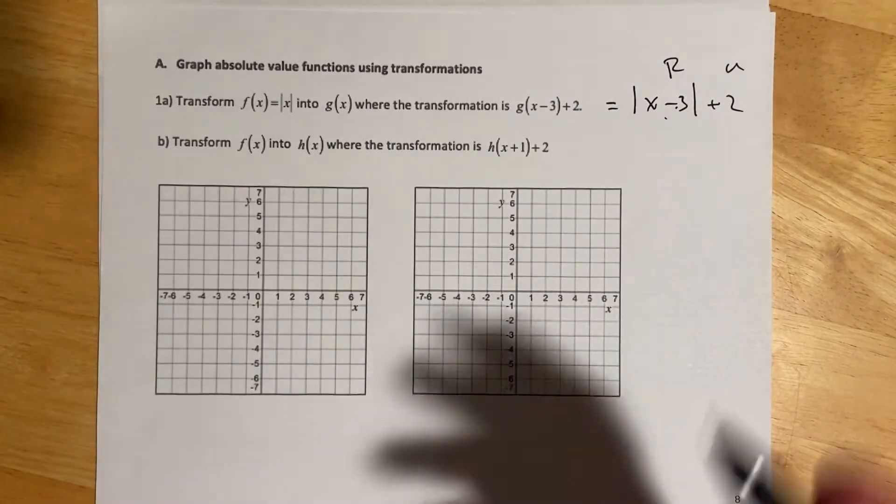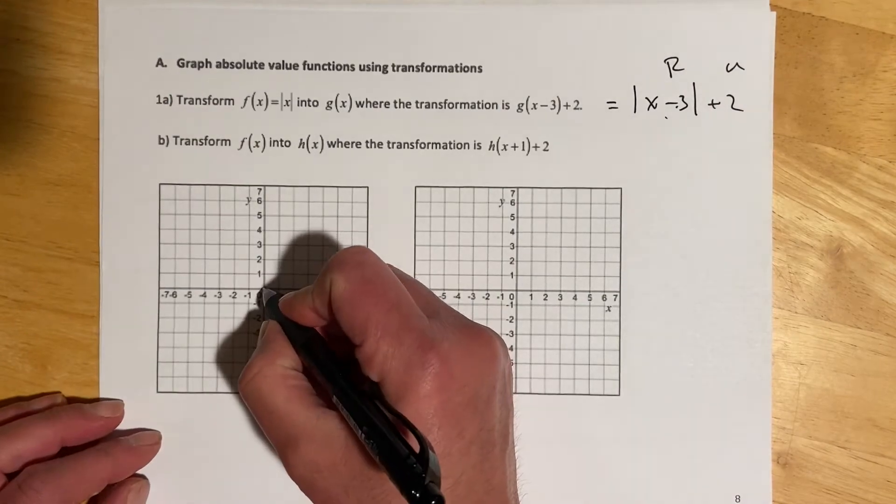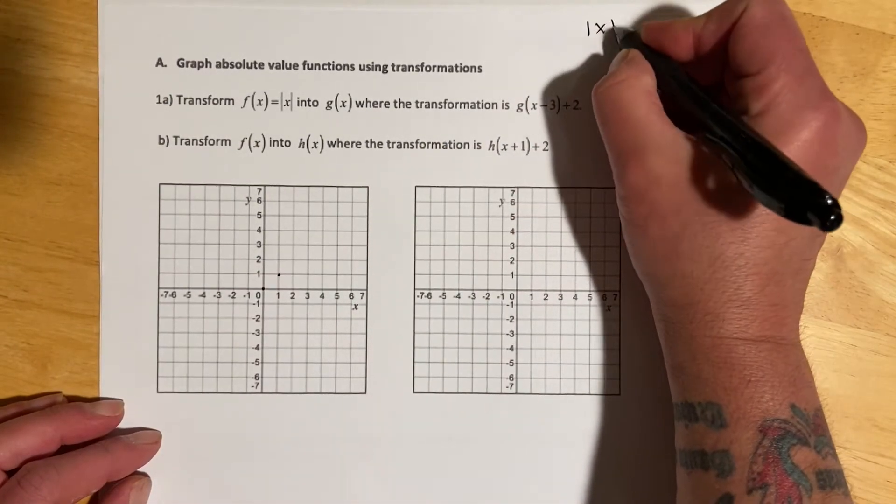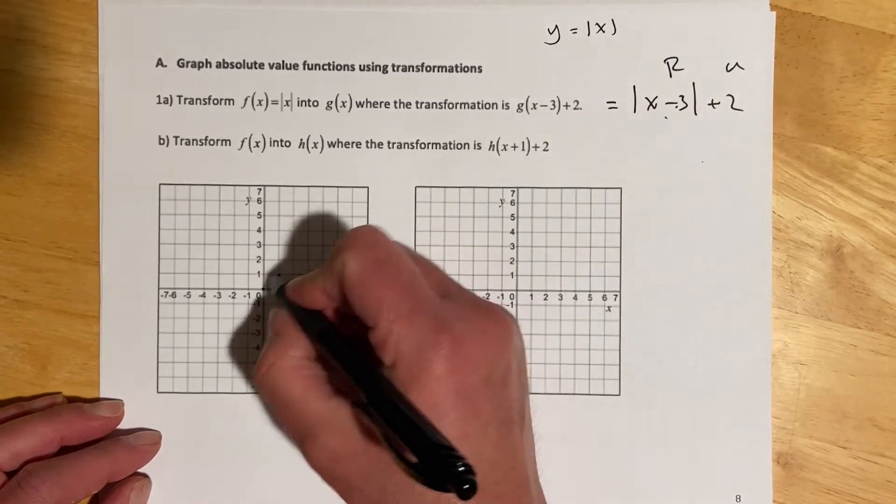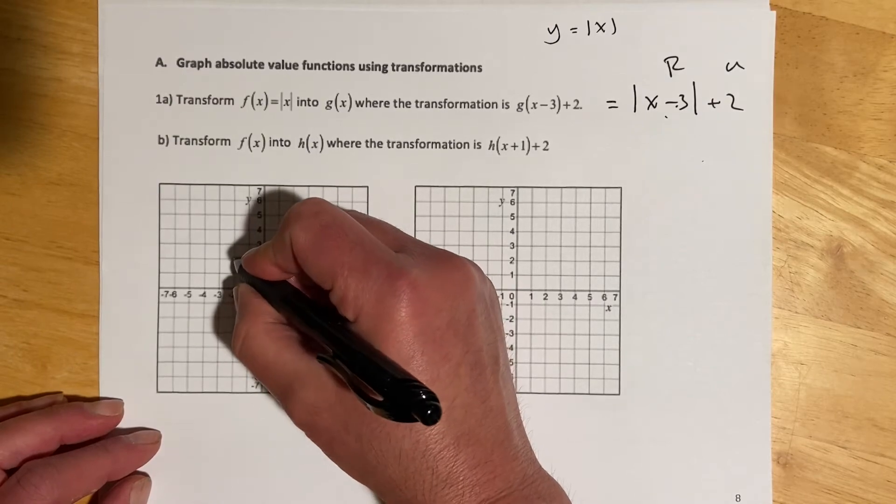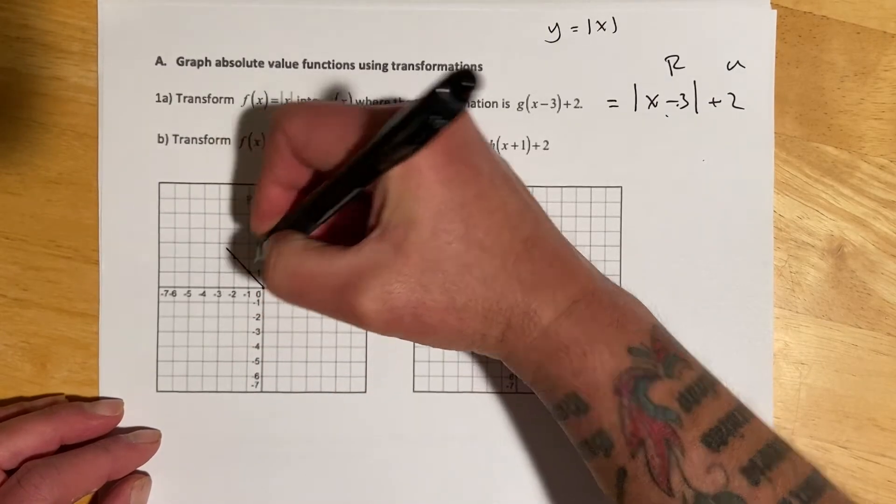Think of our parent function at (0, 0), plain old y equals absolute value of x. That's at (0, 0), and then over 1, up 1, over 1, up 1 on both sides. We've got that V shape.